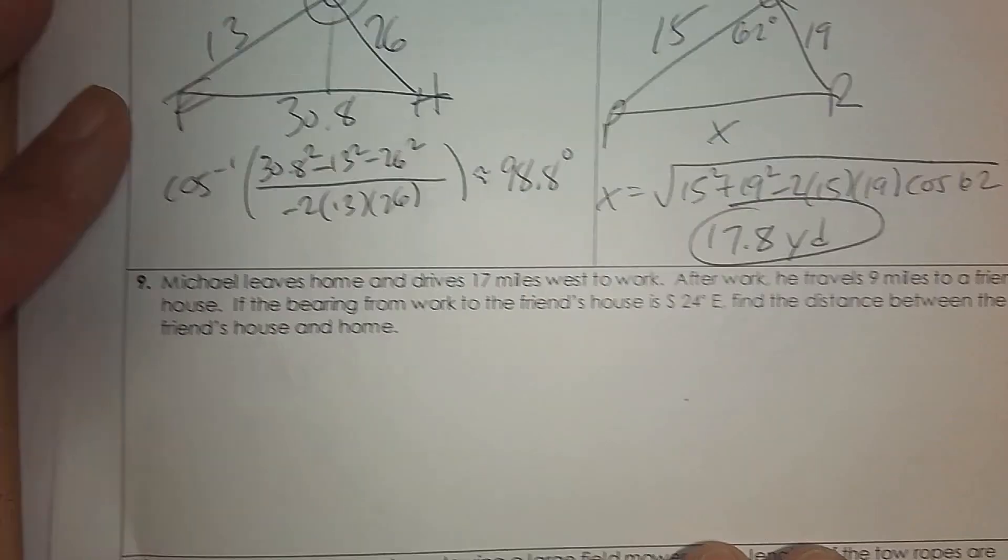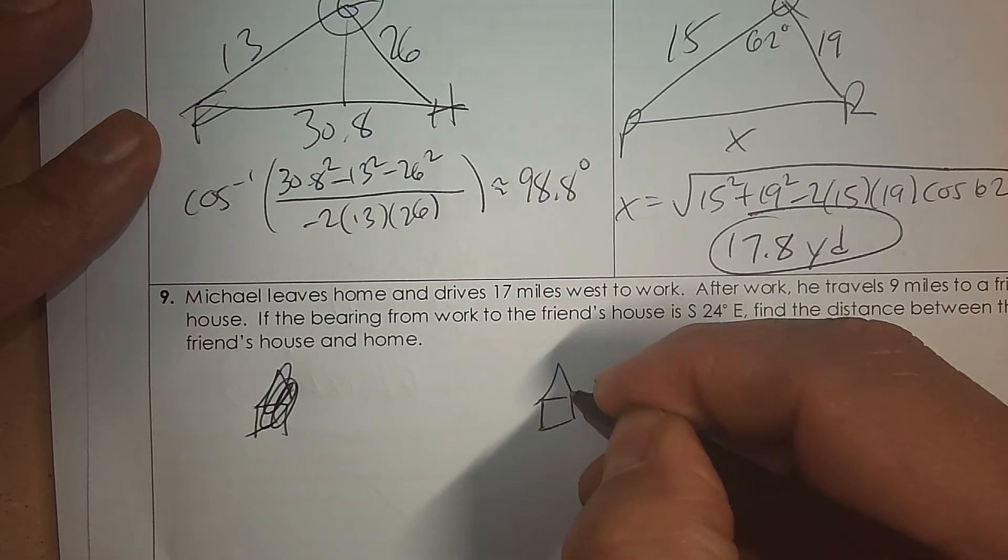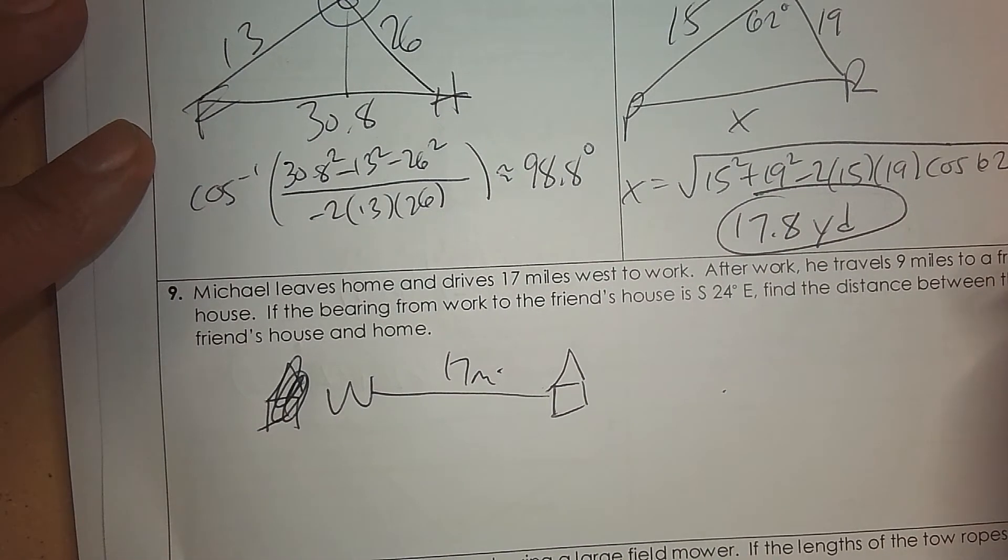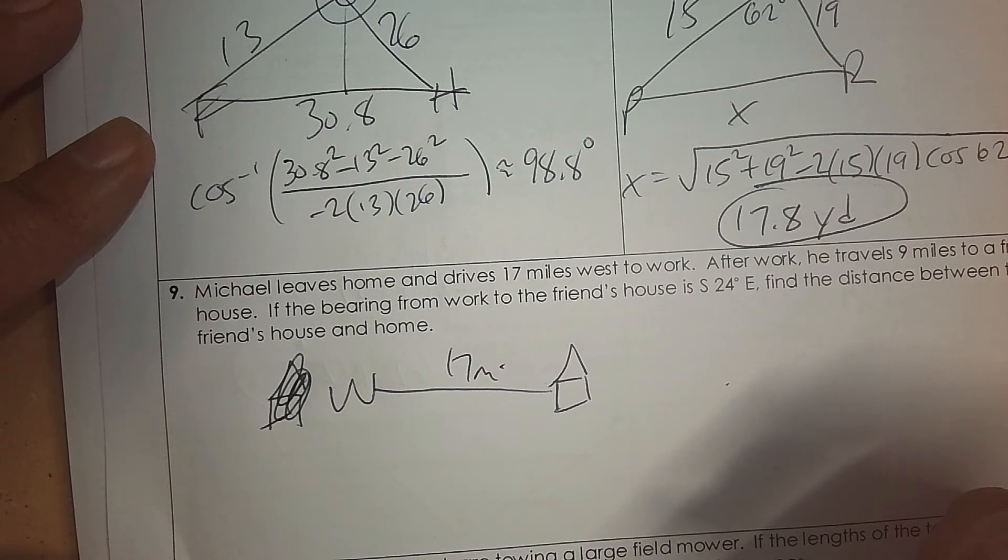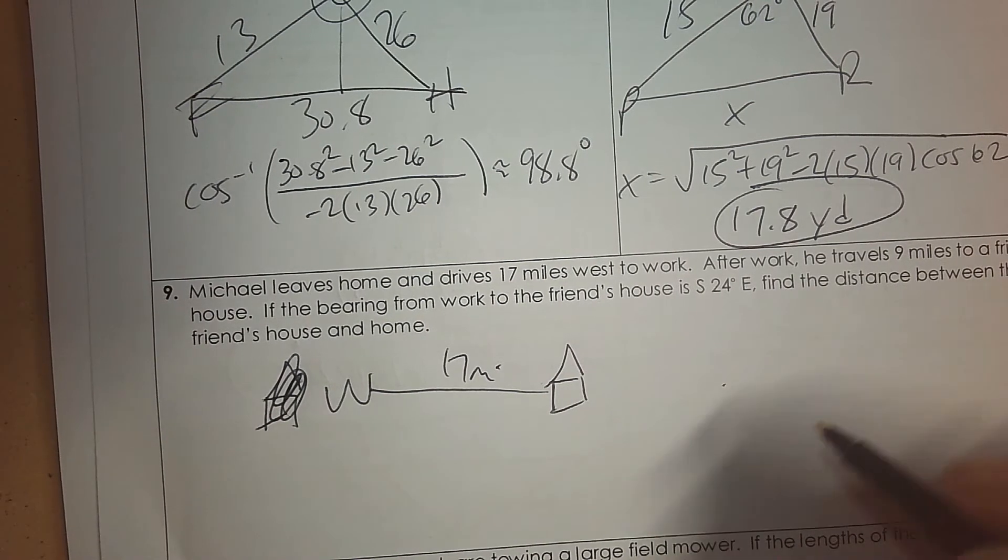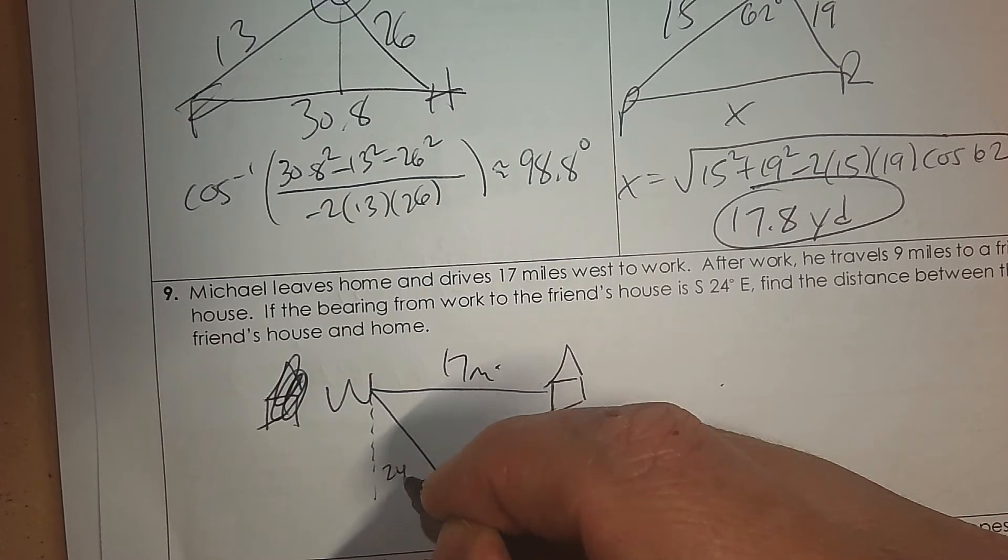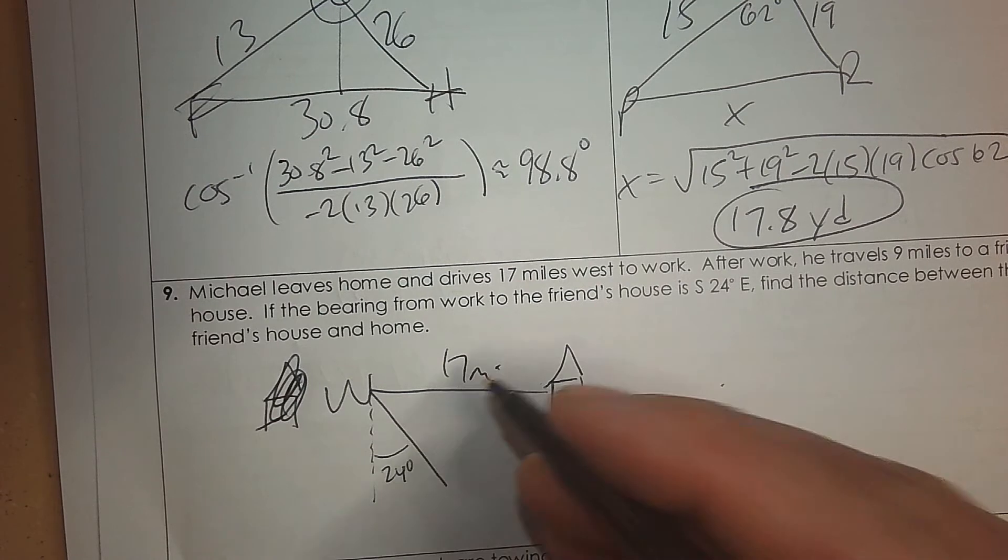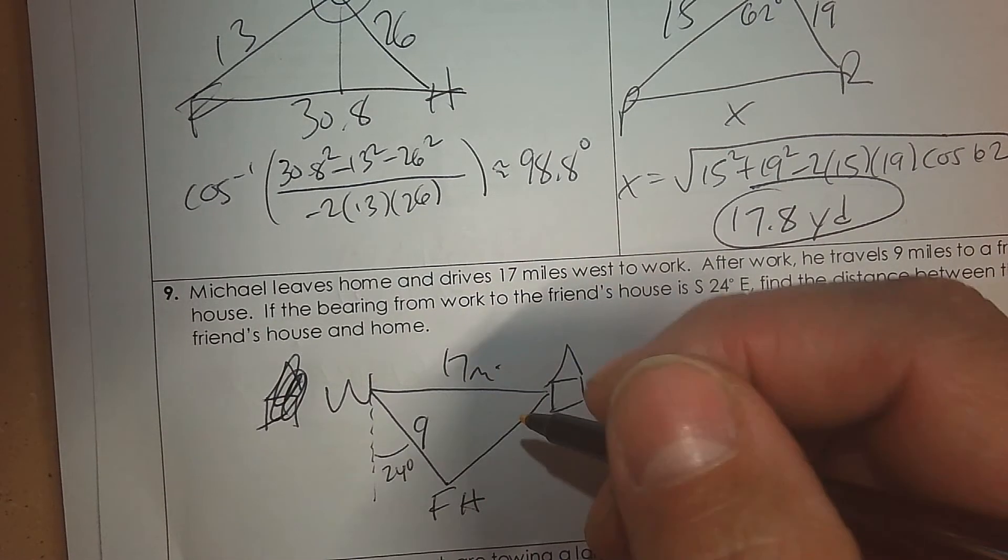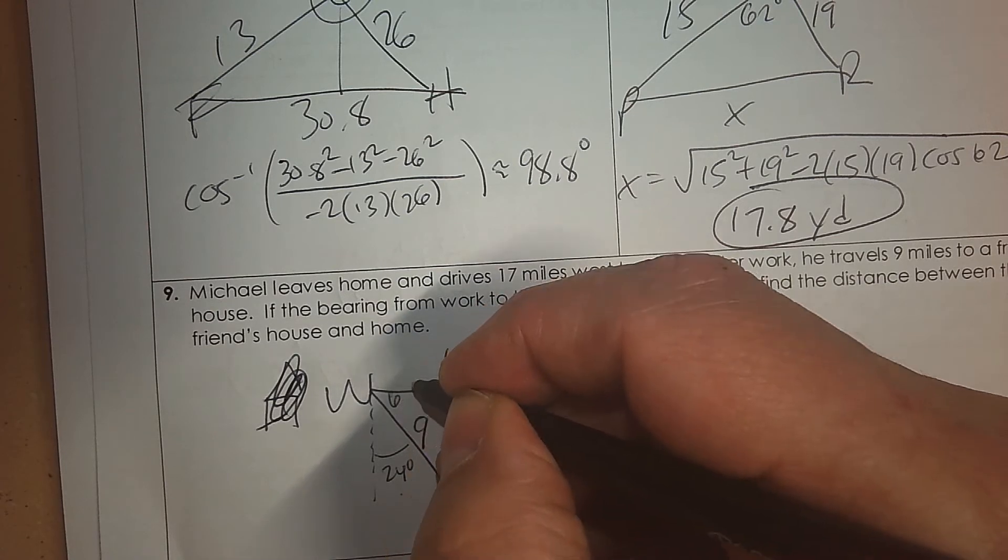Number 9. Michael leaves home and drives 17 miles west to work. So here's his home. And he's going west. So we'll do that right better this way. Here's home. And there's work. And we know that that is 17 miles. After work, he travels 9 miles to a friend's house. If the bearing from work to the friend's house is 24 degrees east from there, find the distance between the friend's house and home. So if I draw a vertical line straight down, 24 degrees east means that this angle here would be 24 degrees to the east. So this is the friend's house. And this is 9. So these are complementary. So that's the angle outside the triangle. 90 subtract 24 gives you 66. And that's what's inside the triangle.